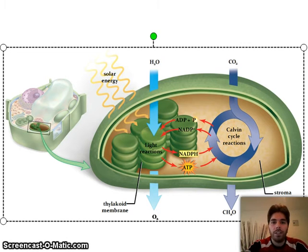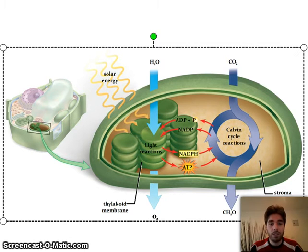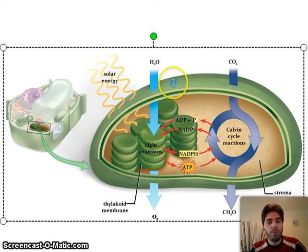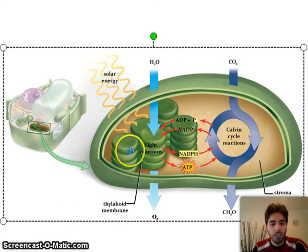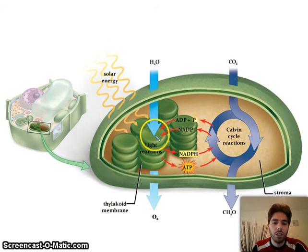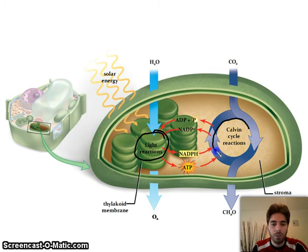Hello everyone. In this video I'll be explaining the details of photosynthesis. If you're watching this, I suggest you watch the first video — the photosynthesis overview I posted earlier. This picture is just to remind you: in photosynthesis we have two main steps — the light reaction and the Calvin cycle reaction. The light reaction may also be called the light-dependent reaction, and the Calvin cycle may be called the light-independent reaction.